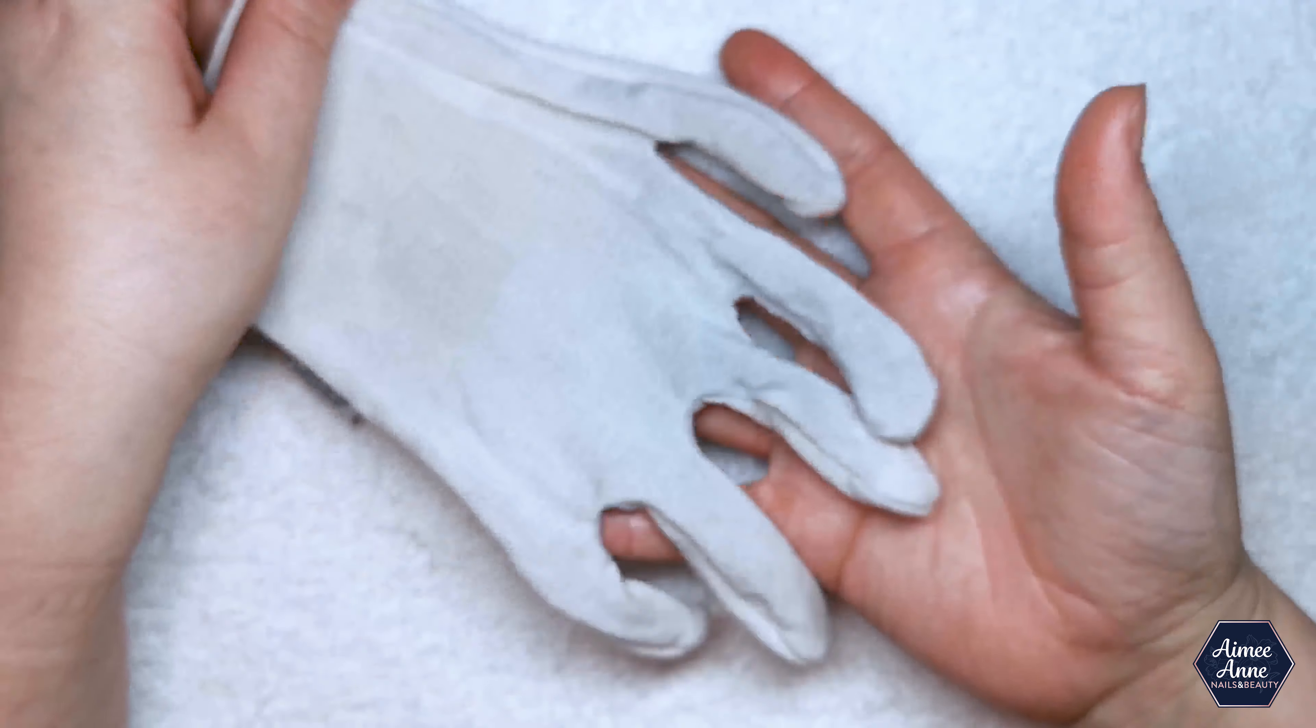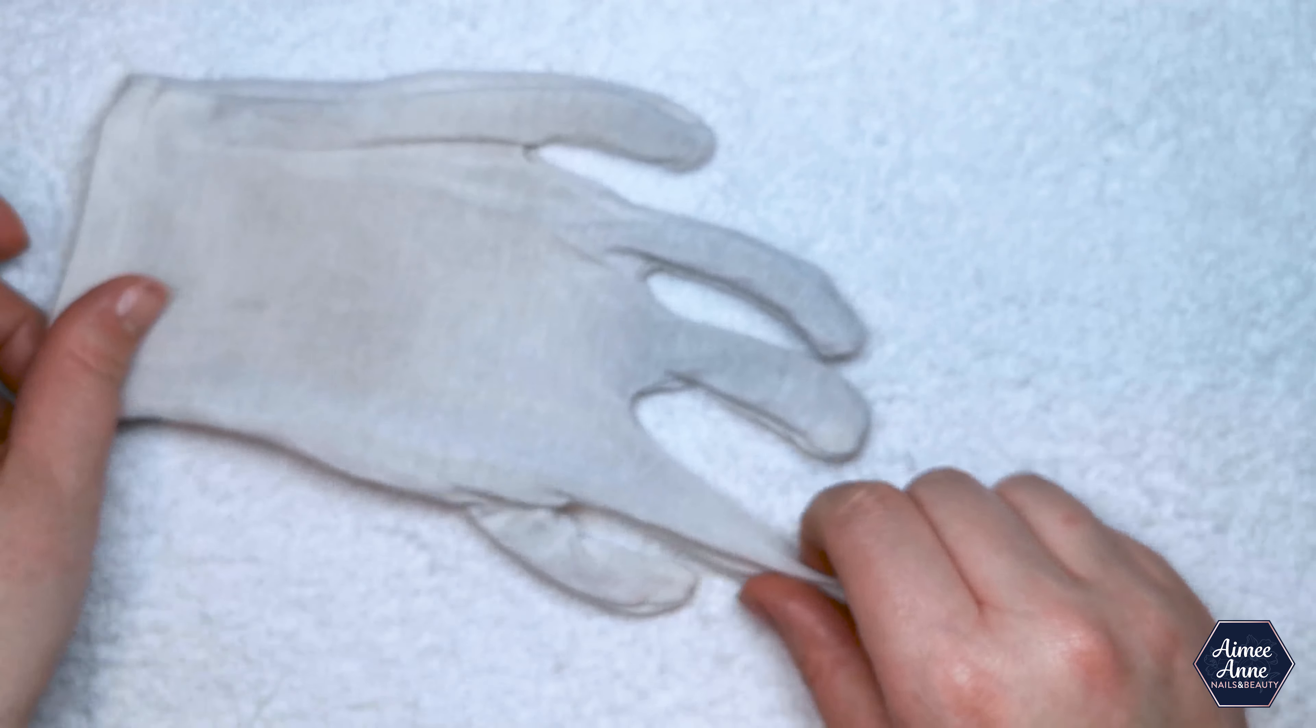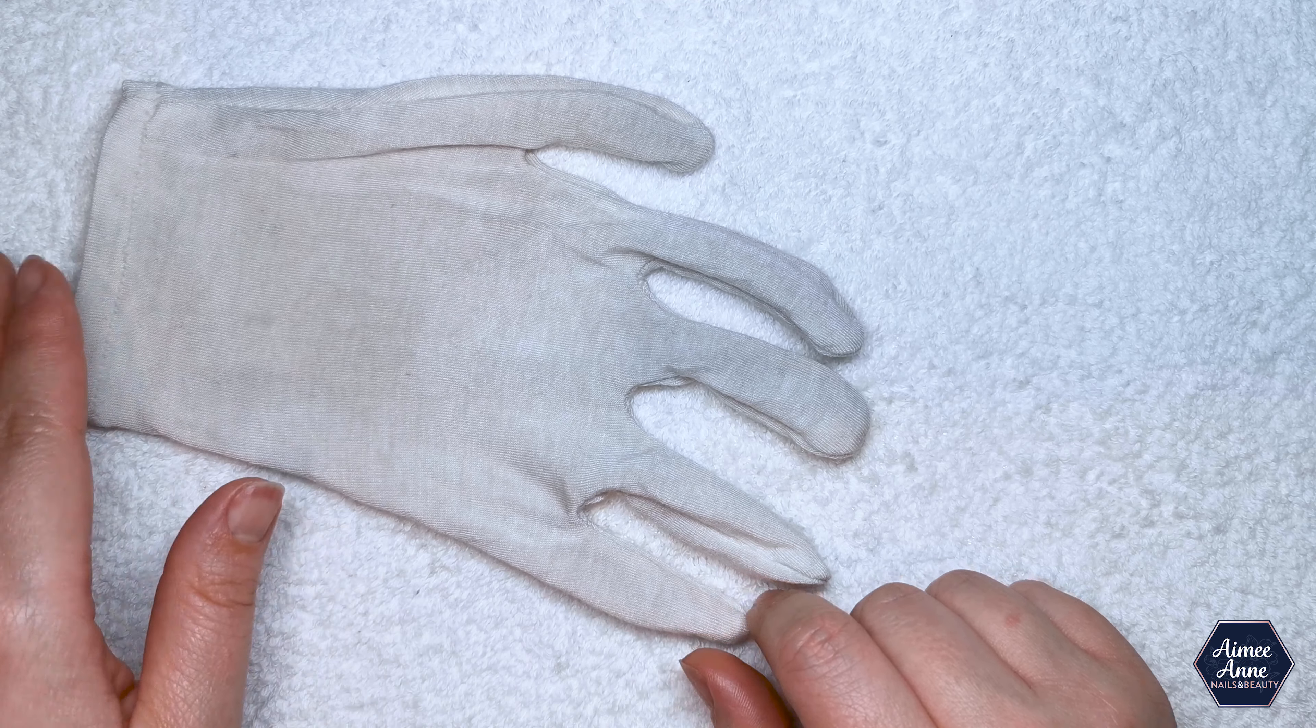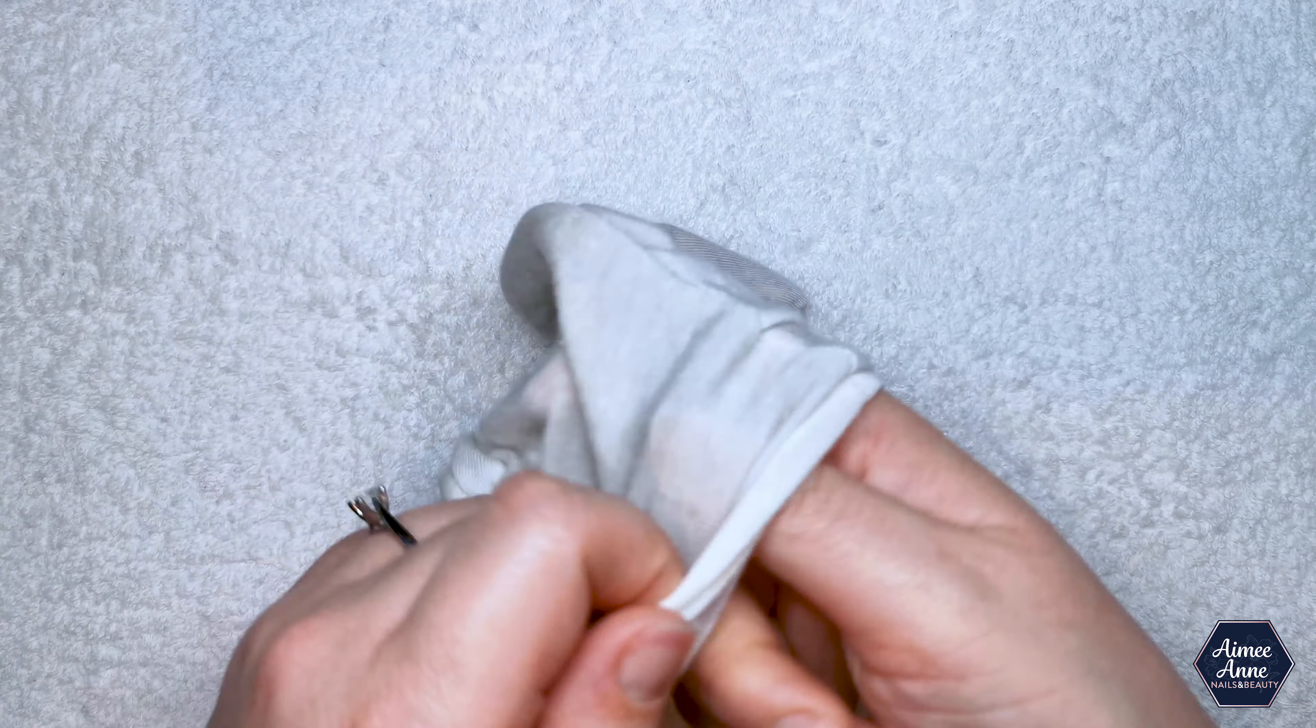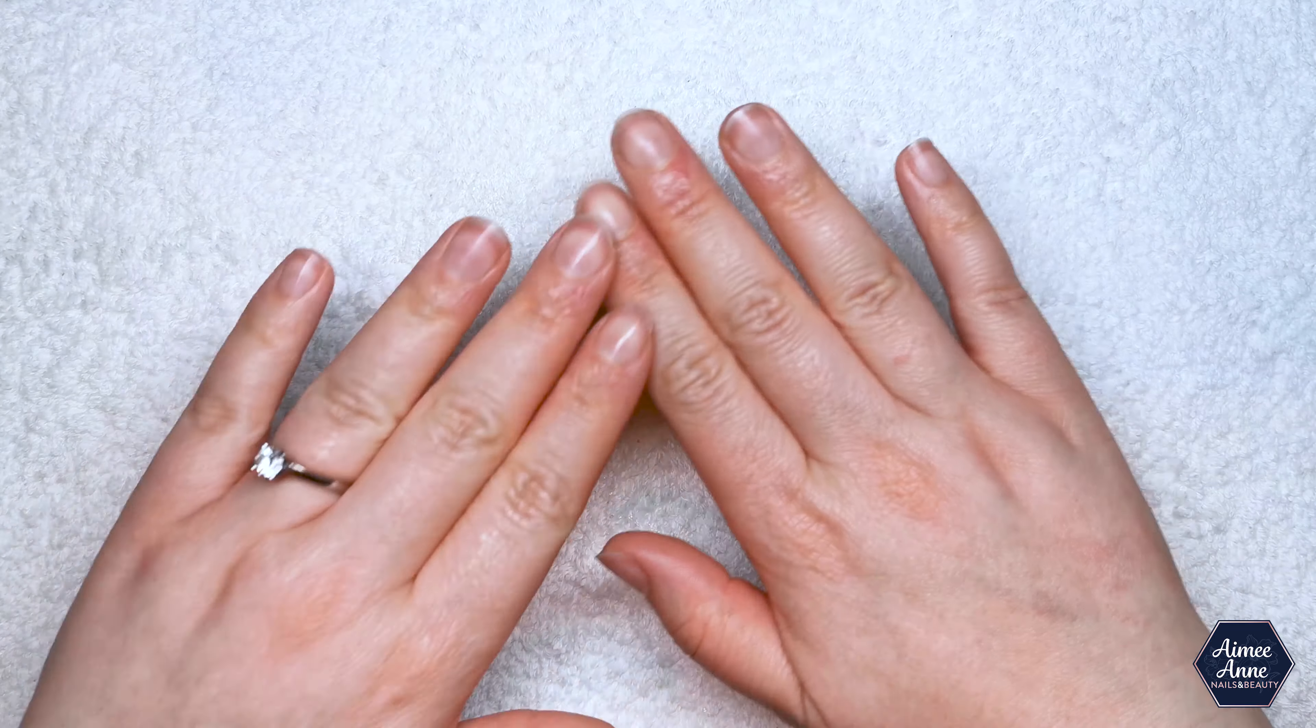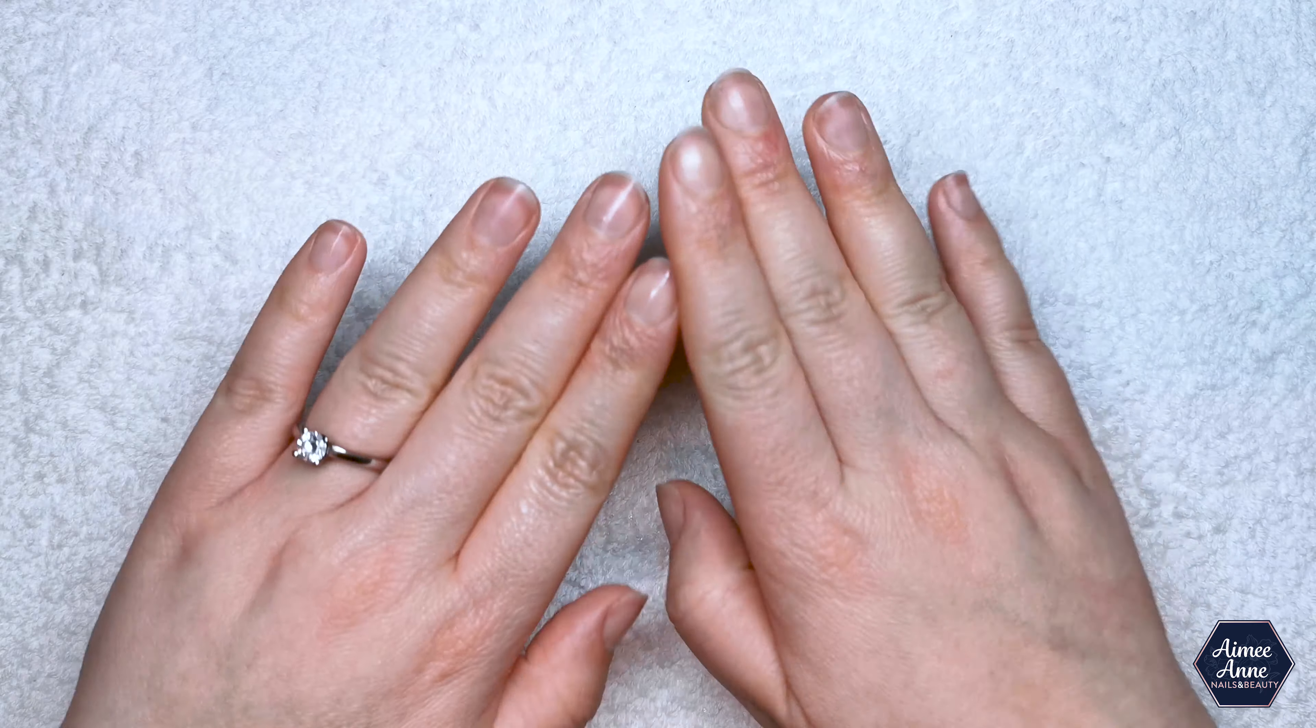The next is your strange-looking cotton gloves. Now I do swear by these if I have dry hands. I would put my moisturizer on, pop these gloves on, and either sit in front of the TV for about 20 minutes, or normally what I do is I wear them to bed. Then you would wake up the next morning, probably with the gloves already off as I always do, but your hands will feel so soft, and I promise that you'd feel the difference.